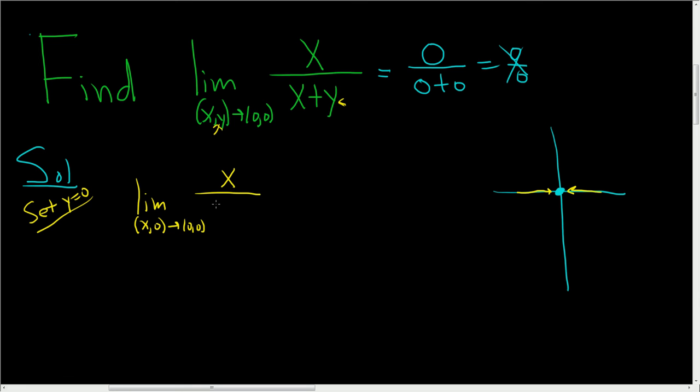So this is x over x plus 0. This equals the limit as (x,0) approaches (0,0) of x over x, which equals the limit as (x,0) approaches (0,0) of 1. So we end up with 1.